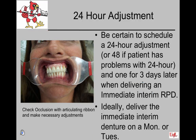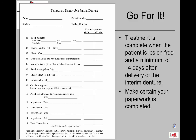Plan appointments well in advance to schedule a 24-hour adjustment and one about three days later when delivering an immediate interim RPD. Ideally, deliver the interim on a Monday or Tuesday so you can see the patient again on Tuesday and Friday. You will use pressure indicator paste to check the inside of the denture and articulating ribbon to check occlusion. Treatment is complete when the patient is lesion-free and a minimum of 14 days have passed after delivery. Make certain all paperwork is signed at each appointment and turned in to the prosthodontic secretary for credit.